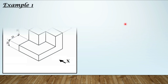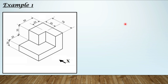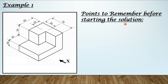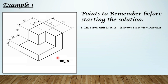So let us take the first example — this is the object which is given to us. Before starting the actual solution there are certain points which you have to remember. The first point: the arrow with label X always indicates the front view direction. Here in this question, this is the arrow and this is the label X, so this is our front view direction.